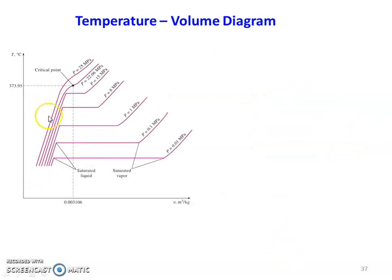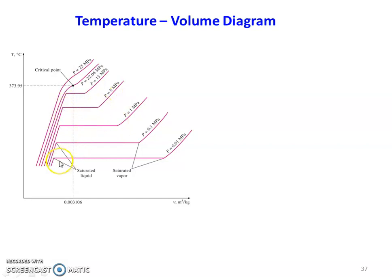Here is the critical point. Let us see what the critical point is. Looking at the previous diagram for convenience: for each pressure line there is a saturated liquid point and a saturated vapor point. For 8 MPa, there is a saturated liquid point and a saturated vapor point. If all the saturated liquid points are connected, they form one line; and if all the saturated vapor points are connected, they form another line. These two lines meet at the critical point.